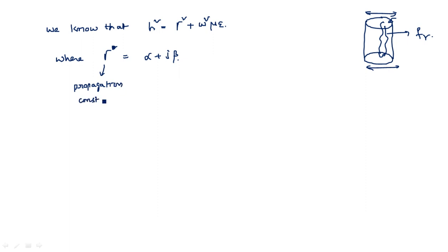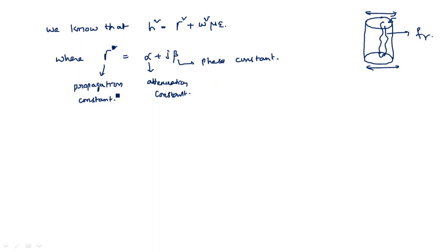γ is the propagation constant. α is the attenuation constant — it refers to the signal when there is no propagation. β is the phase constant — it refers to the phase when the signal is traveling through the waveguide.